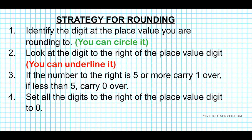First of all, you want to identify the digit at the place value that you're rounding to. You have to know if you're rounding to the ones place, tenths place, hundredths, or on and on. You can give yourself a visual — as we will do in the examples today — by circling the digit at the place value you're rounding to. Next, take a look at the digit to the right of the place value digit you're rounding to. You can underline it just to give yourself a visual, as we will be doing in today's examples.